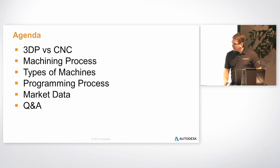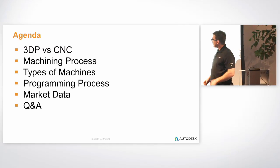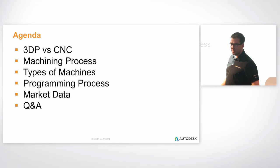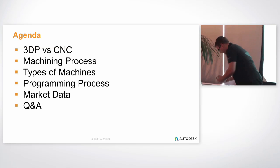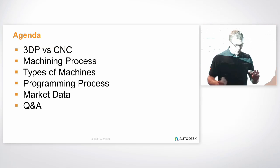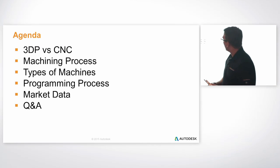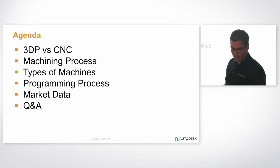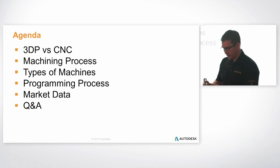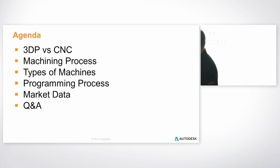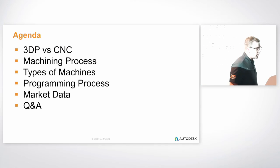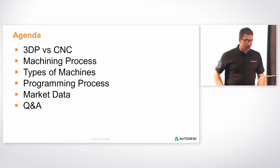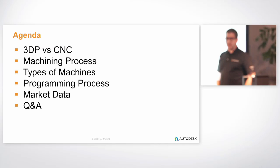I wanted to start by just comparing the differences between 3D printing or additive manufacturing and subtractive, which is the CNC stuff. I brought two parts — we'll start passing them around and take a quick look at them. One's 3D printed, and the other one is done on the Haas CNC machine, so it's subtractive. We'll take a look at some of the different machining processes and the types of machines.